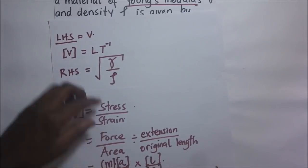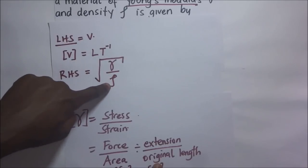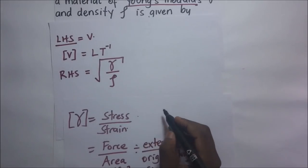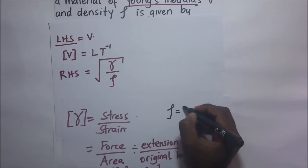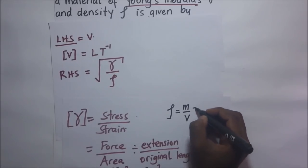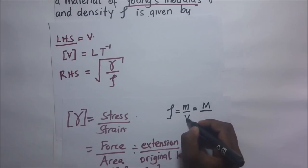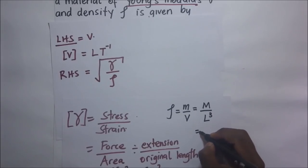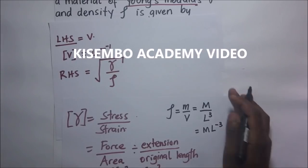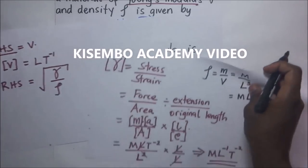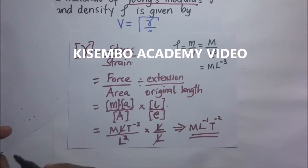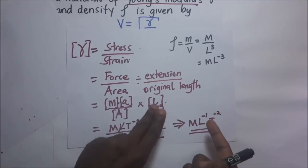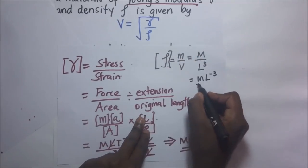For density: density equals mass over volume. Mass is M, volume is L³, so density has dimensions ML⁻³.